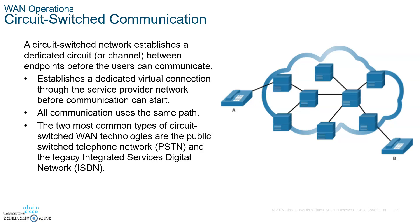We left off with WAN operations. There are two different types of communications a service provider can offer you: circuit switching and packet switching. With circuit switching, the ISP establishes a dedicated circuit between the sender and the receiver. Examples are the PSTN and ISDN, and both use PPP — point-to-point protocol — as the framing used when communicating over a circuit switched network.